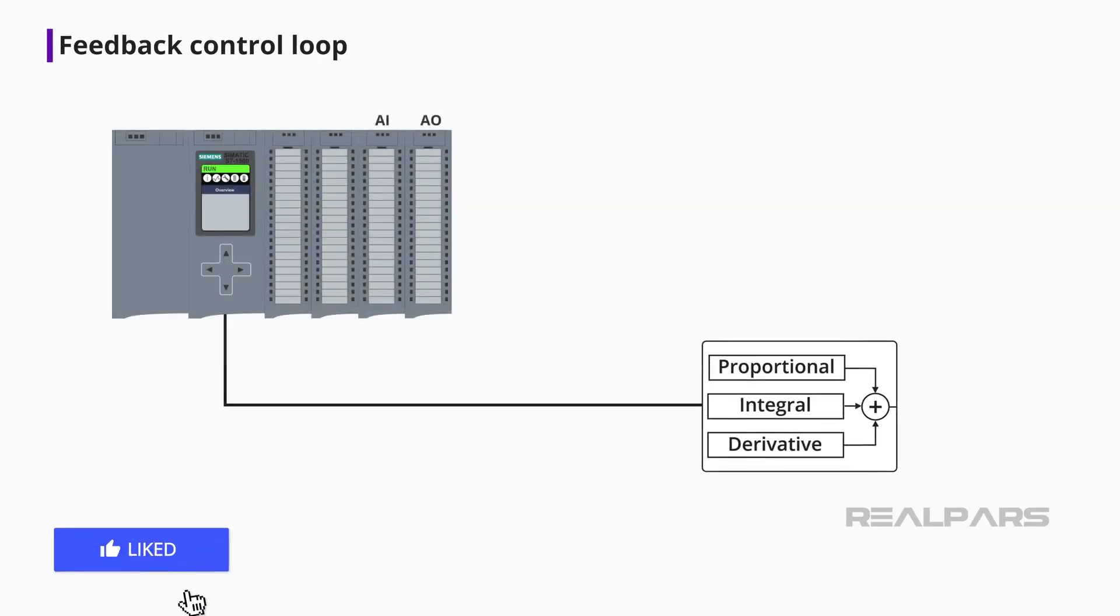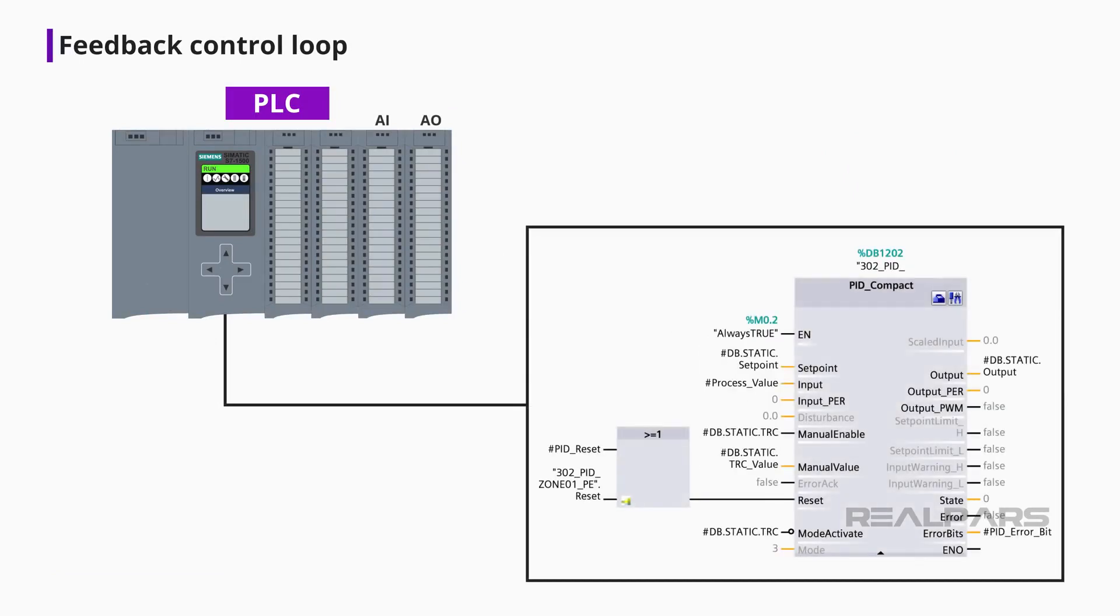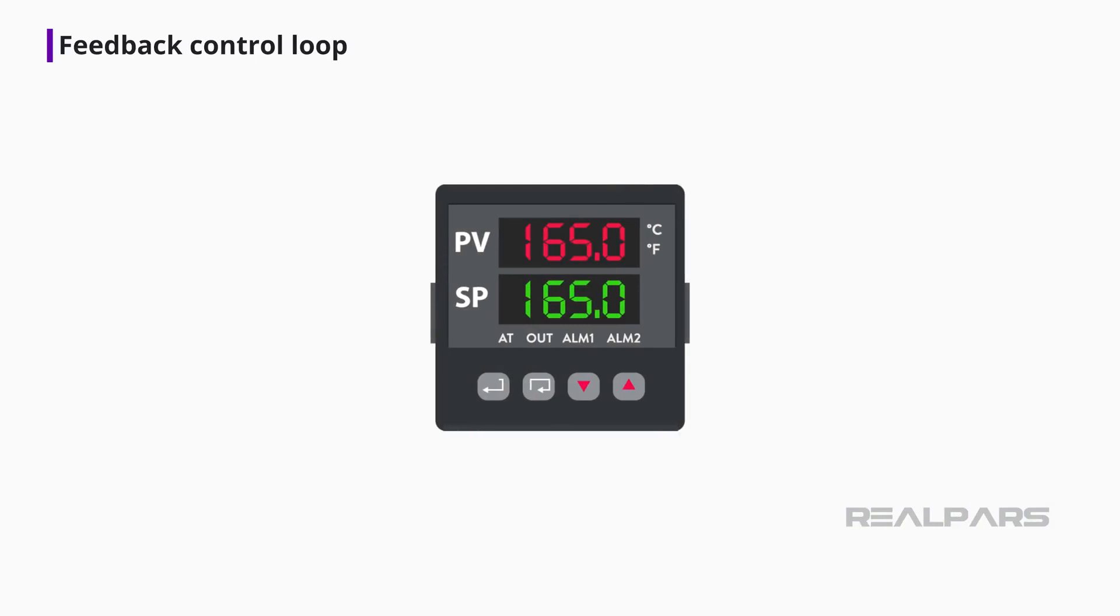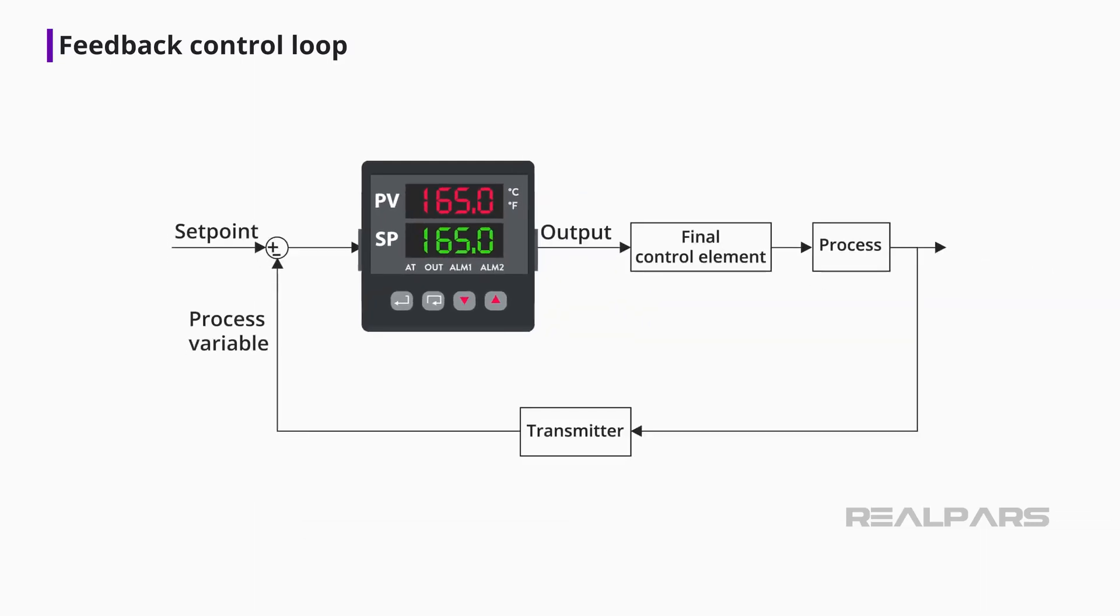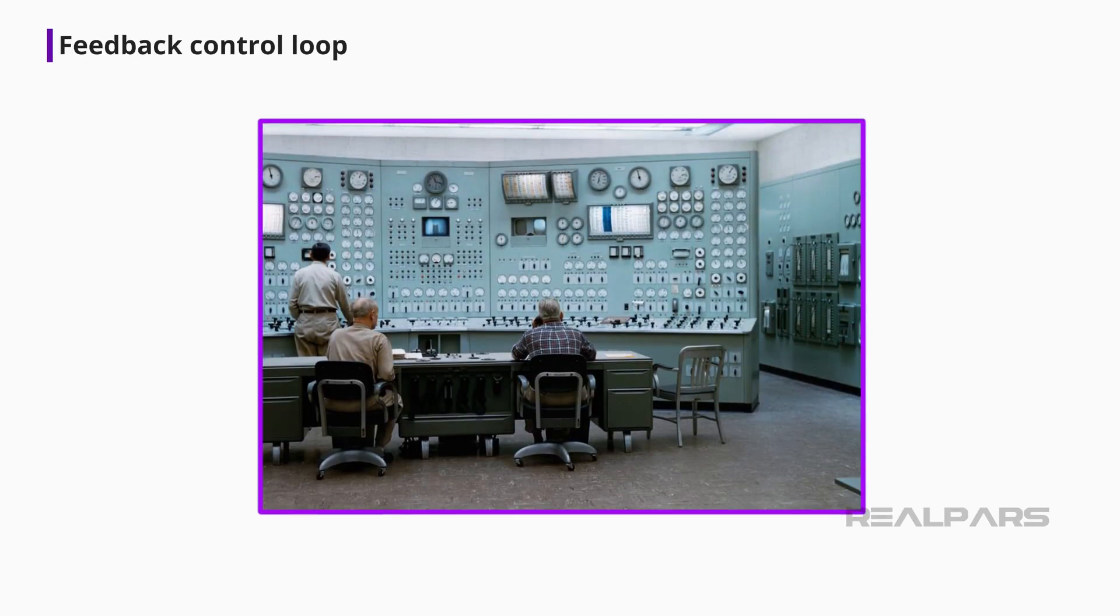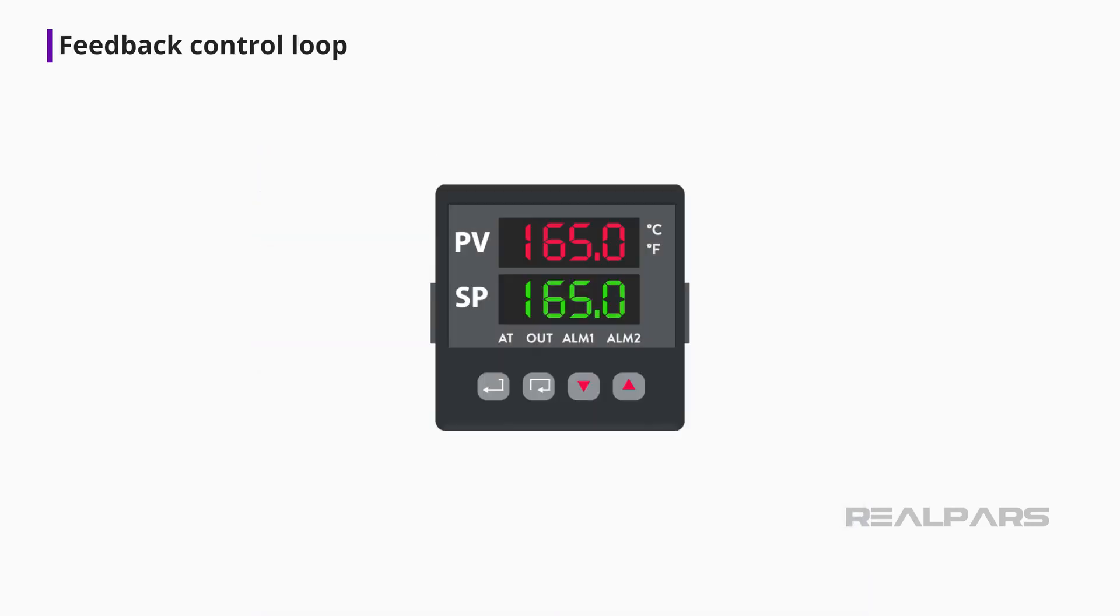Most modern PID controllers are part of a PLC or DCS, and are created in the program control logic using block commands. Before PLCs came along, a PID controller was a standalone device responsible for controlling one loop. A control room would have dozens or hundreds of standalone controllers mounted on a panel. There are still many standalone PID controllers being manufactured and used today.